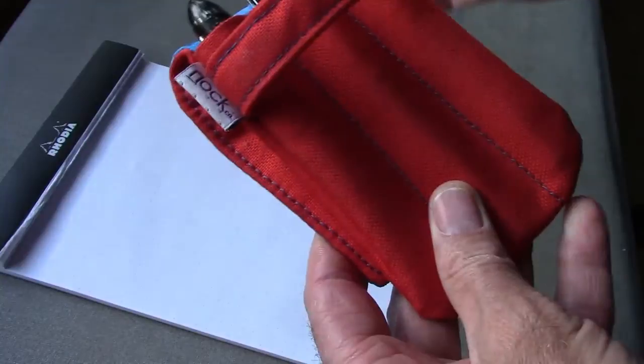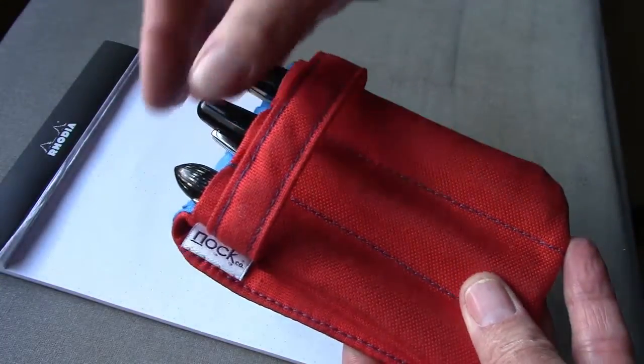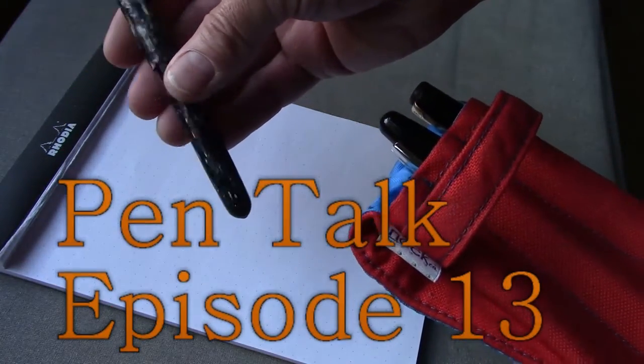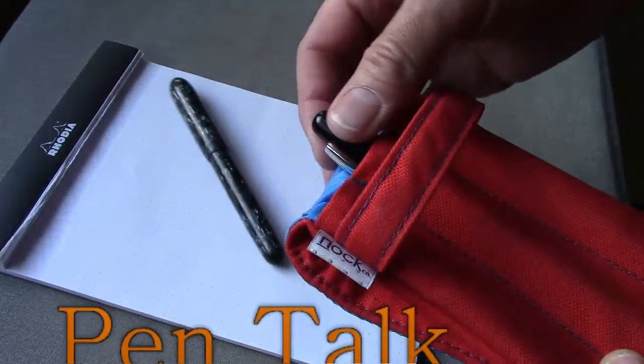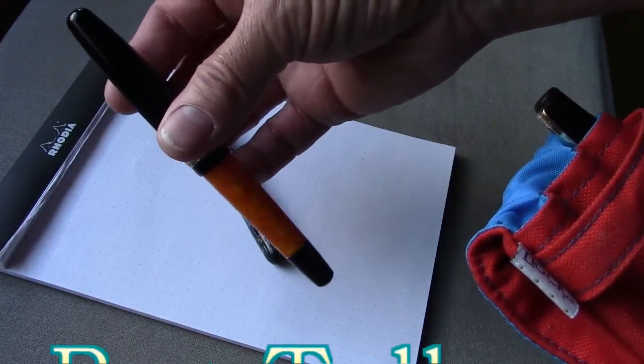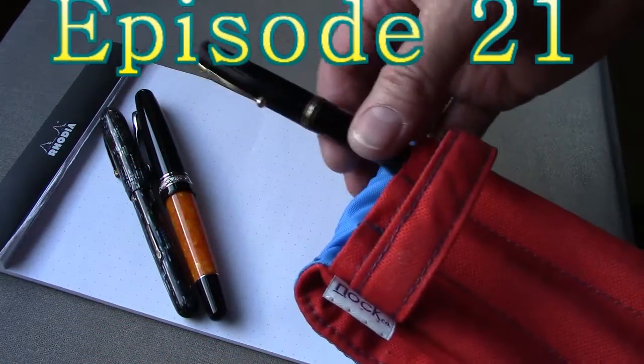We have three pens. You may recognize two of them if you've watched some of my earlier videos. This is the Conklin with a glider point. The Delta Dolce Vita Zen. And this is a new one which I haven't done a video on.